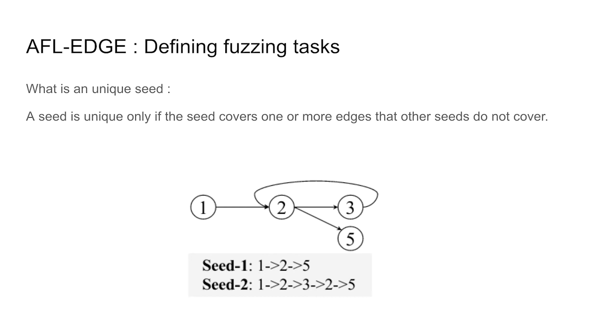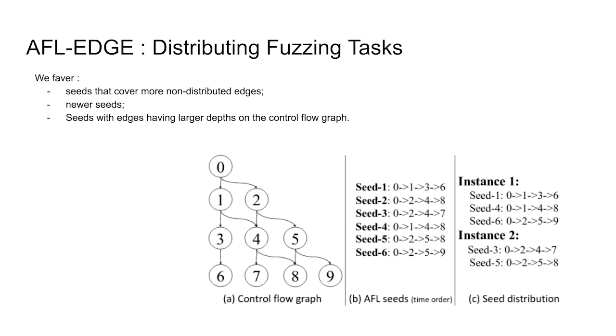In our solution, to determine the uniqueness of a seed, we consider the edges that their hit count covered by the seed as a criteria. For example, shown in this figure, when seed 1 and seed 2 both exist at the same moment of task distribution, we will consider seed 1 non-unique since seed 2 has all the edges of seed 1.